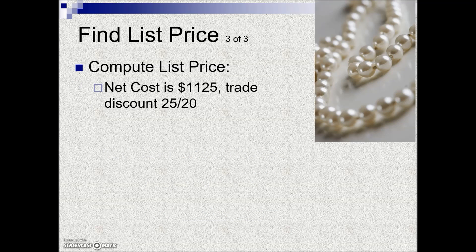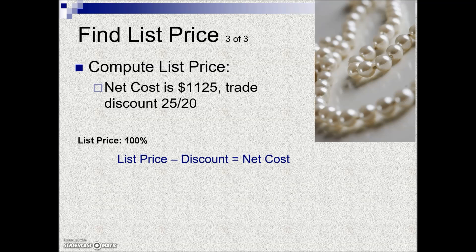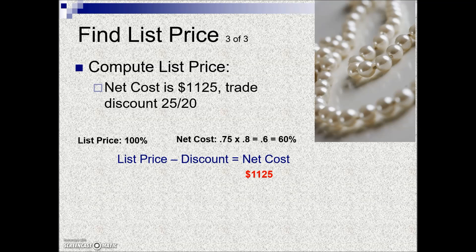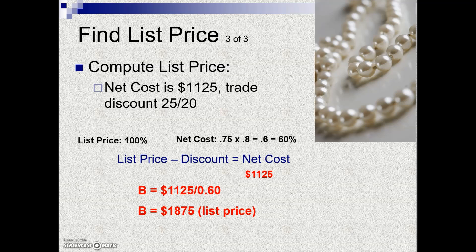In this example, we're given a net cost of $1,125, a trade discount of 25%, and an additional 20%, and we're asked to find the list price. Again using the net cost formula, treating the list price as our base at 100%, we calculate the complement of the series discount: complement of 25% is 75%, complement of 20% is 80%. Their product is 60%, which is the rate the net cost represents. We're given the net cost as our part, so dividing part by rate gives us the list price of $1,875.